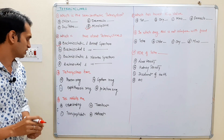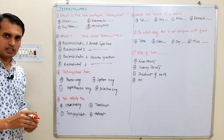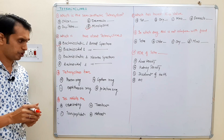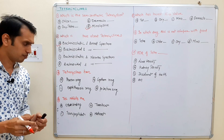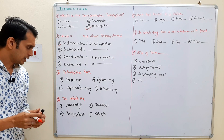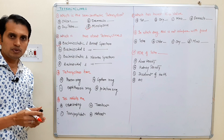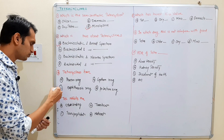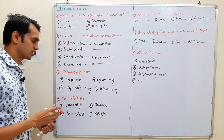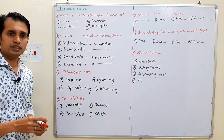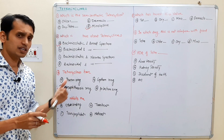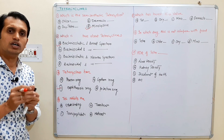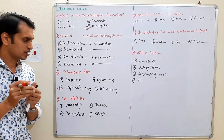Question 3: Tetracyclines have which ring — penam ring, sepham ring, naphthacin ring, or beta-lactam ring? The answer is C — they have an octahydro naphthacin ring.